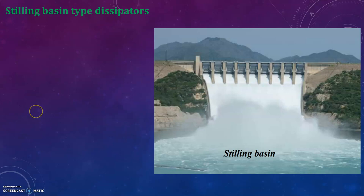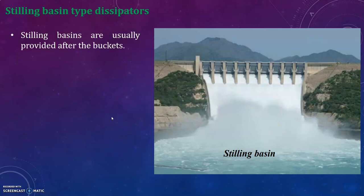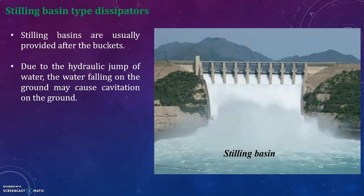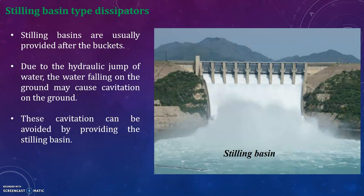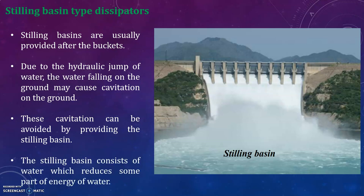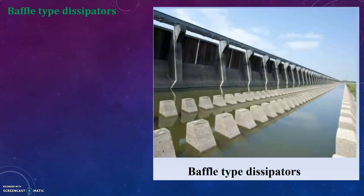Stilling basin type dissipators are usually provided after the buckets. Due to the hydraulic jump of water, water falling on the ground may cause cavitation, which can be avoided by providing a stilling basin. The stilling basin consists of water which reduces some part of the energy of the flow.